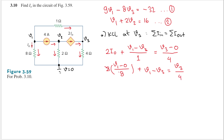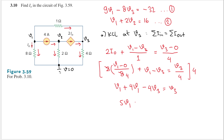Multiplying both sides by 4 to clear the denominator: V1 plus 4V1 minus 4V3 equals 4V3, giving 5V1 minus 5V3 equals 0. Dividing both sides by 5: V1 minus V3 equals 0. This is equation number 3.